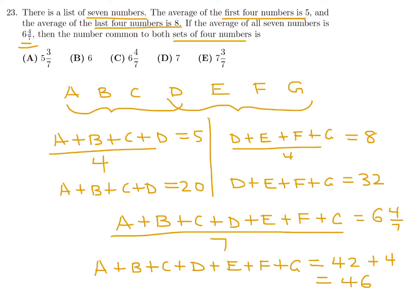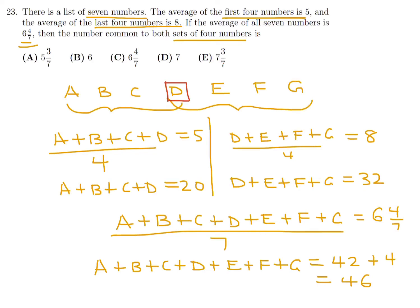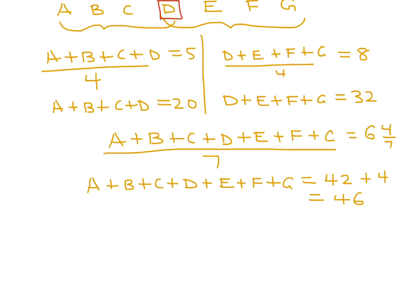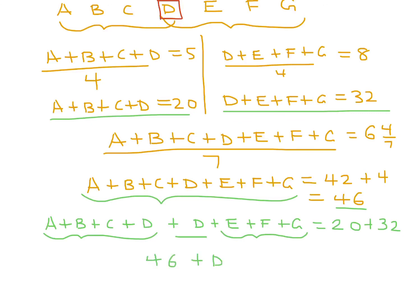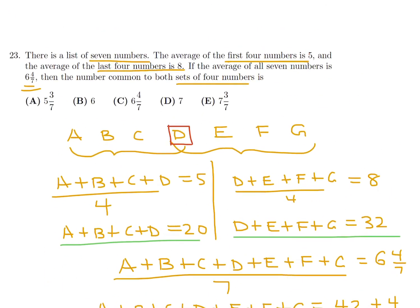The question asks for D, the number common to both sets of four. The quickest way is to add the first two equations: A plus B plus C plus D plus D plus E plus F plus G equals 20 plus 32. We know the full sum is 46, so 46 plus D equals 52, meaning 52 minus 46 equals D. Therefore D equals 6. The answer is choice B.